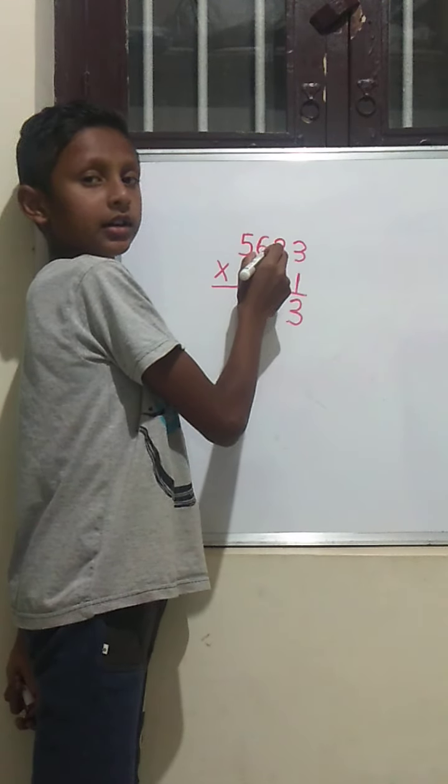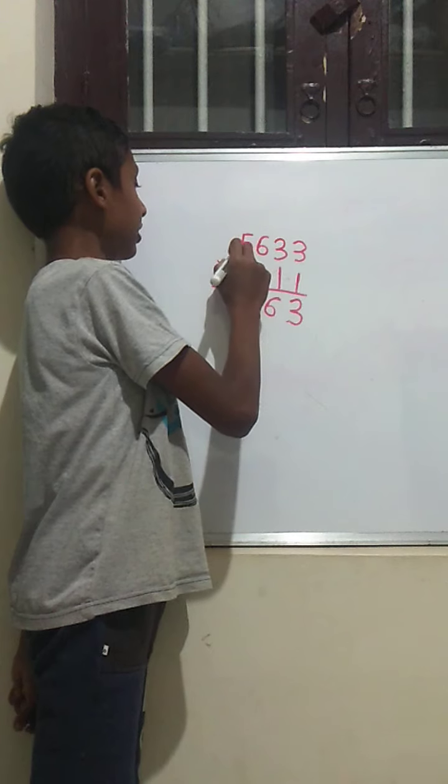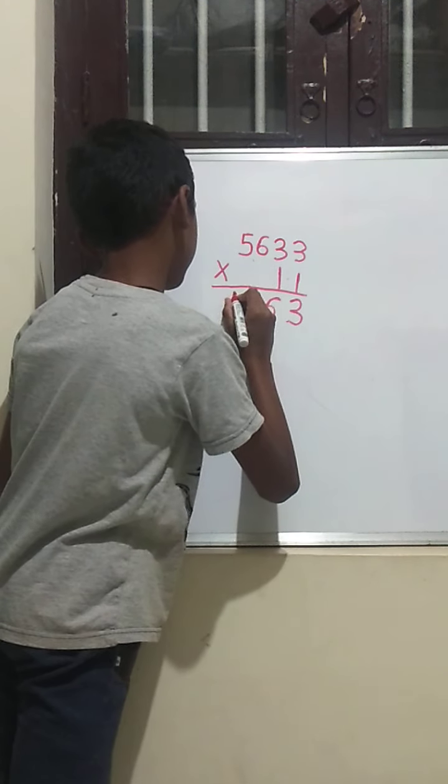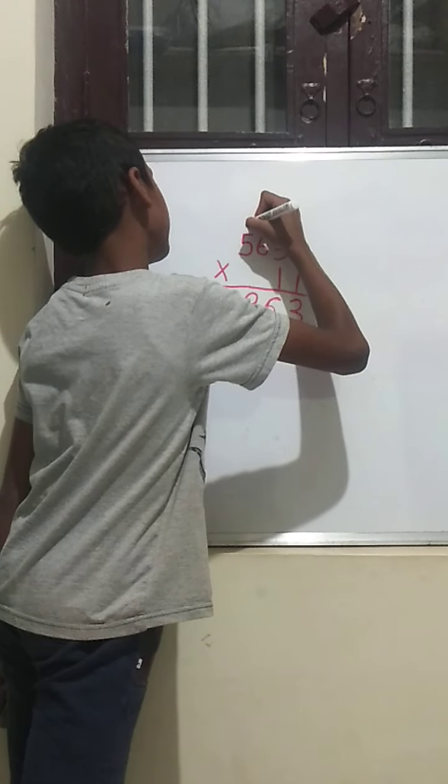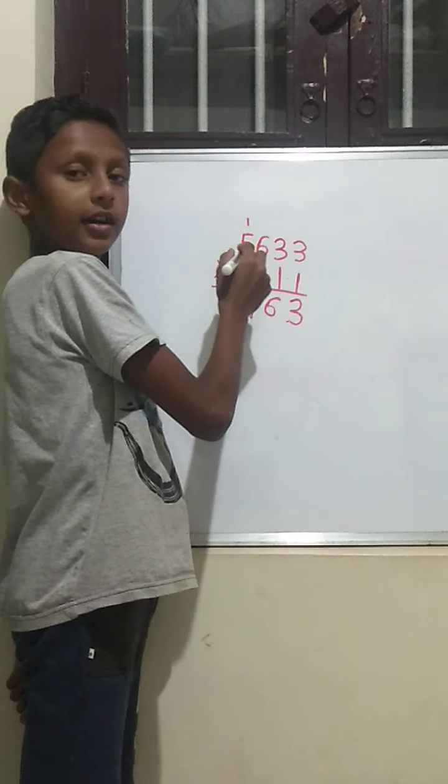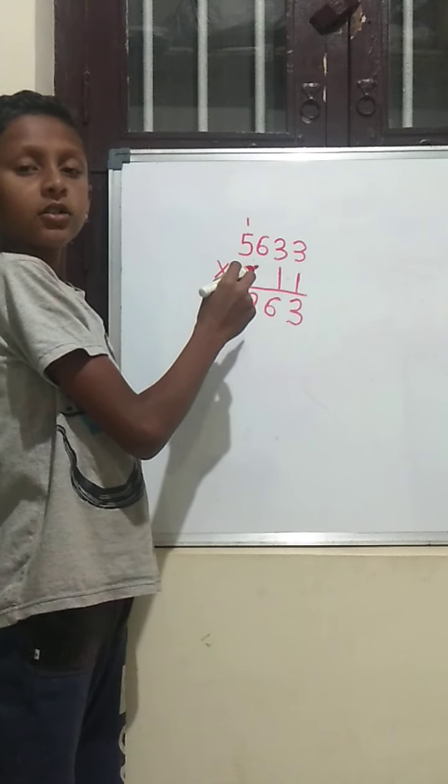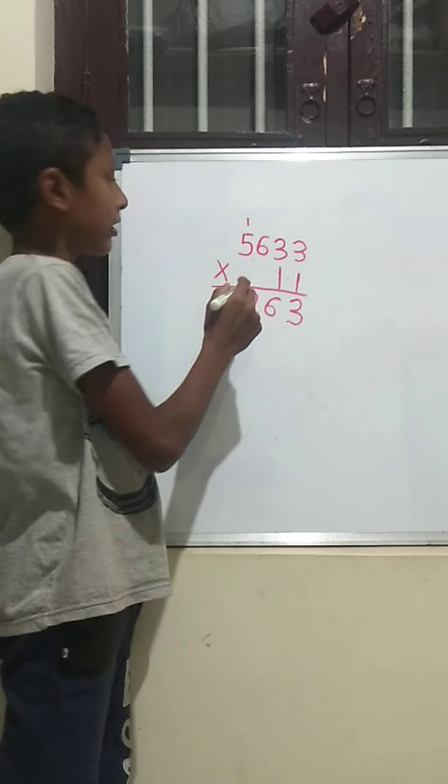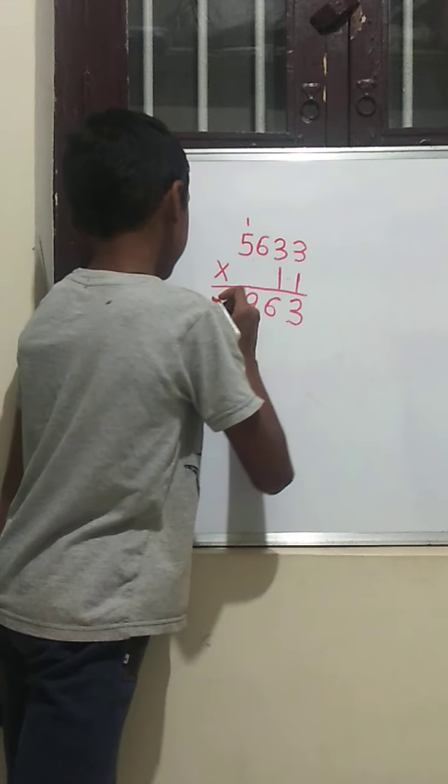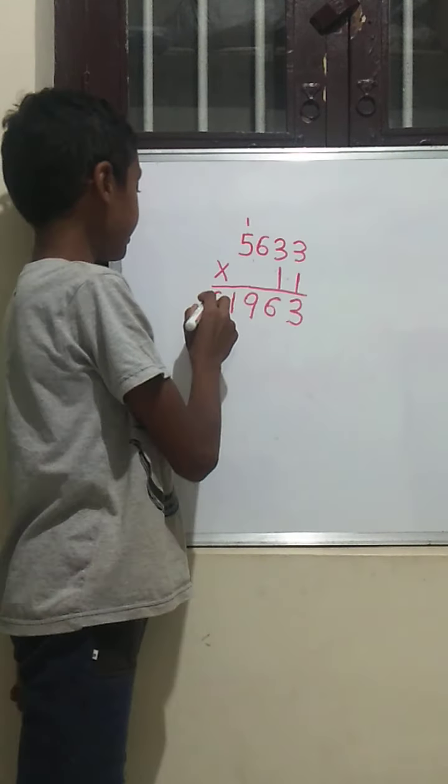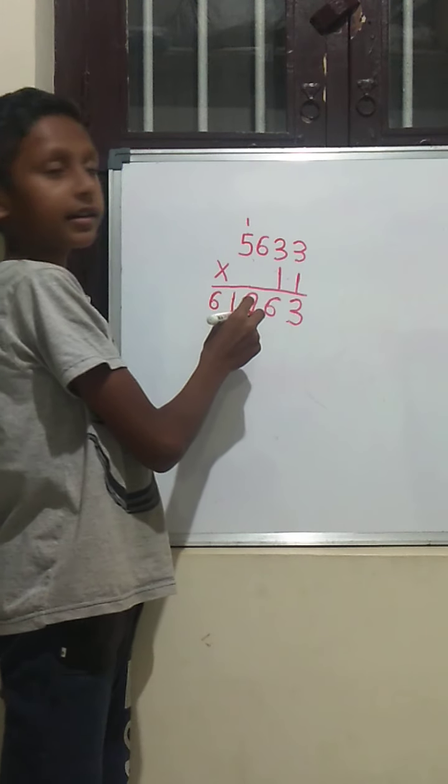And again, we should add the right side number to the left side number. 6 plus 5 is 11. One carry. The last digit. If we have carry on it, we should add or else we should write as it is. 5 plus 1 is 6. The answer is 61963.